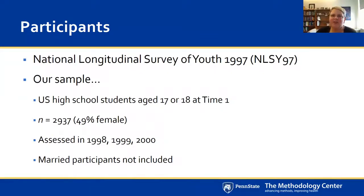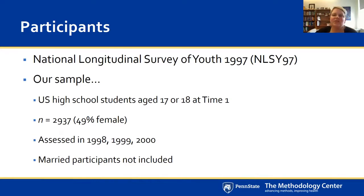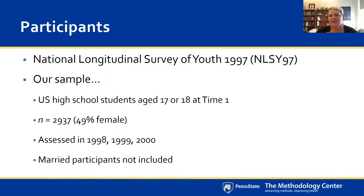These data were from the National Longitudinal Survey of Youth 1997 (NLSY97). We narrowed the sample to U.S. high school students age 17 or 18 at time one, looking at transitions post-high school — just over 2,900 participants, slightly less than half female. We used waves from 1998, 1999, and 2000. As a side note, married participants were not included — we thought sexual risk taking for married 17- or 18-year-olds looked different from the rest of the population.